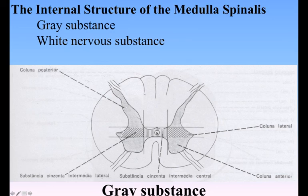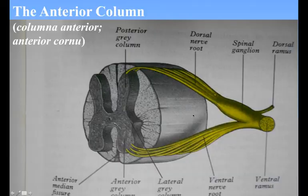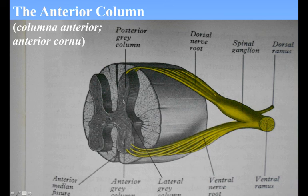In a transverse section, each half of the gray substance is shaped like a comma or crescent, the concavity of which is directed laterally, and these, together with the intervening gray commissure, present the appearance of the letter H. An imaginary coronal plane through the central canal serves to divide each crescent into an anterior or ventral and a posterior or dorsal column. The anterior column, columna anterior, directed forward, is broad and of a rounded or quadrangular shape. Its posterior part is termed the base and its anterior part the head, but these are not differentiated by any well-defined constriction. It is separated from the surface of the medulla spinalis by a layer of white substance, which is traversed by the bundles of the anterior nerve roots.